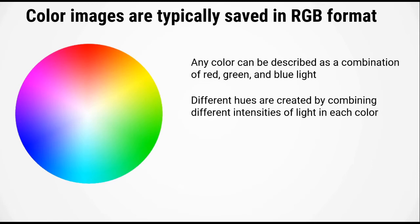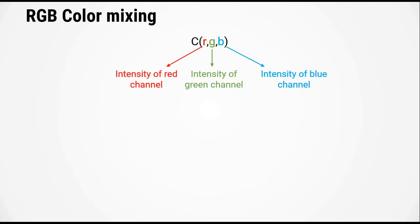The different hues are created by combining different intensities of light in each color. Imagine that you have a color specified by the RGB property. R is the intensity of the red channel, G is the intensity of the green channel, and B is the intensity of the blue channel. We're going to use the unsigned 8-bit integer format, which goes from 0 to 255, with 0 being the lowest intensity and 255 being the highest.